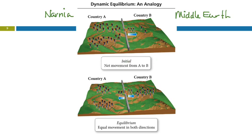There's a higher population here in Narnia and there's a low concentration of people, a low population in Middle Earth. When we open the border, we're going to let you guys go back and forth as you wish. Initially, it's almost exclusively people moving from Narnia to Middle Earth because there's a lot of people over here. The rate of them moving back to Narnia is going to be extremely small.